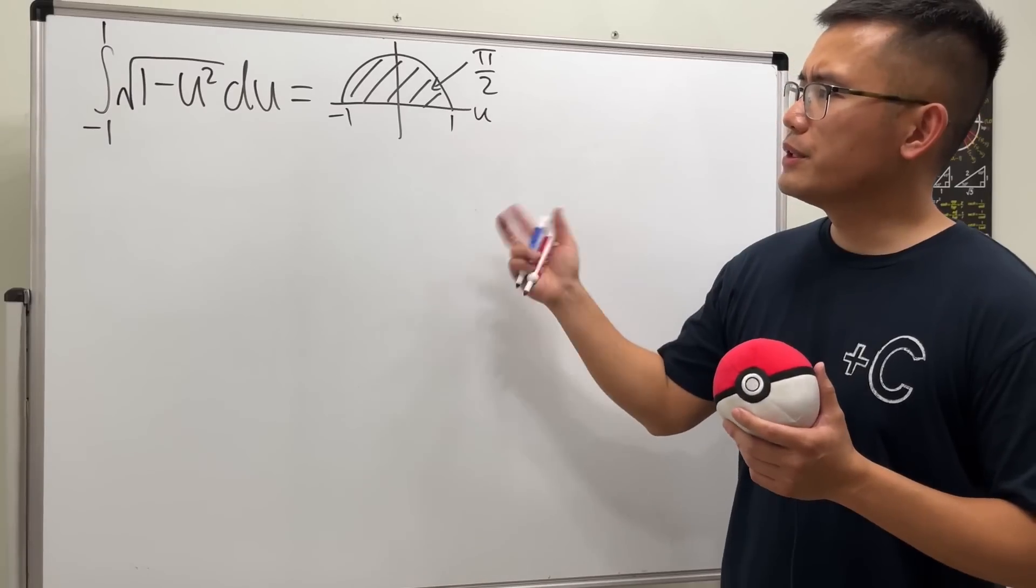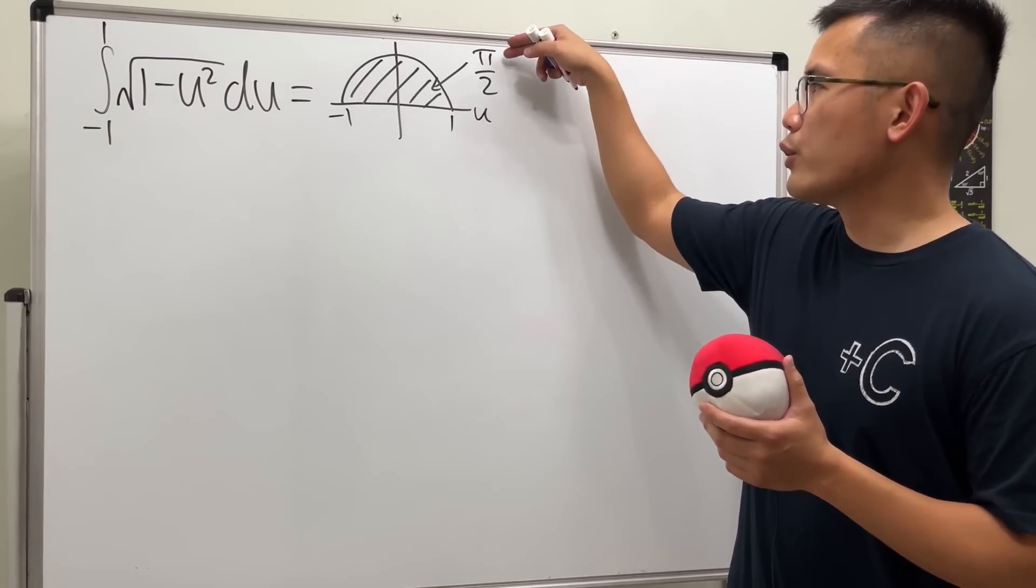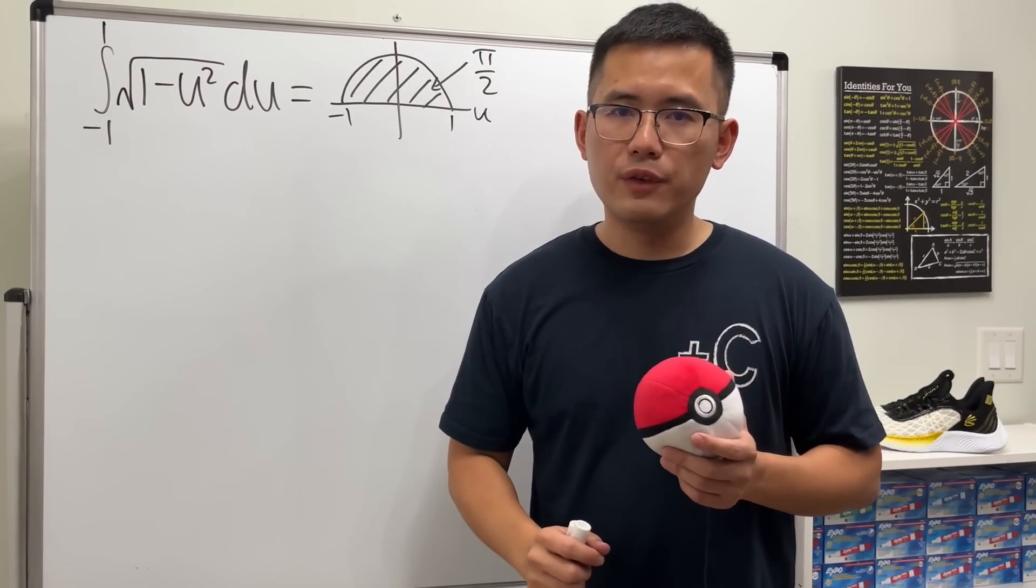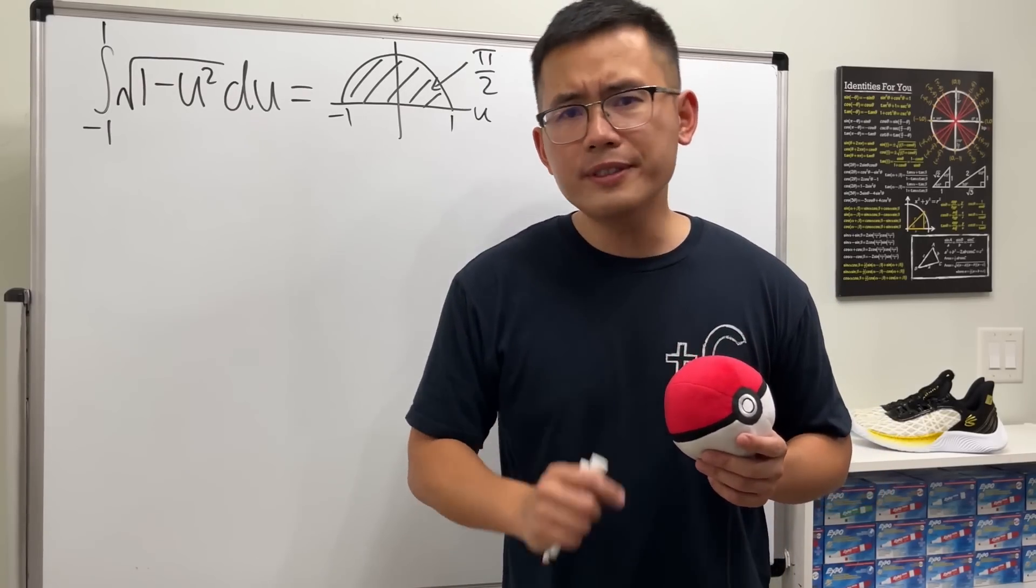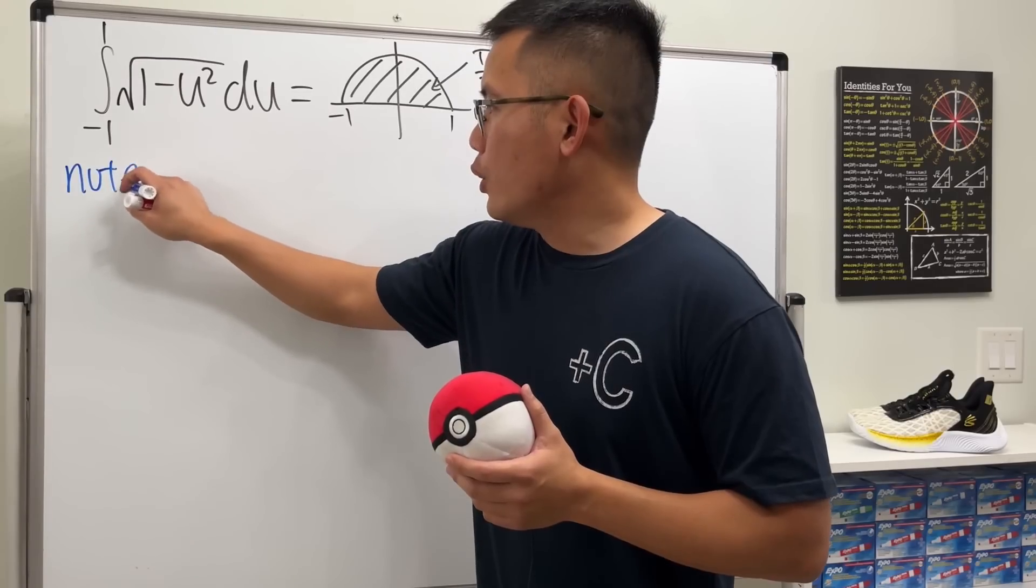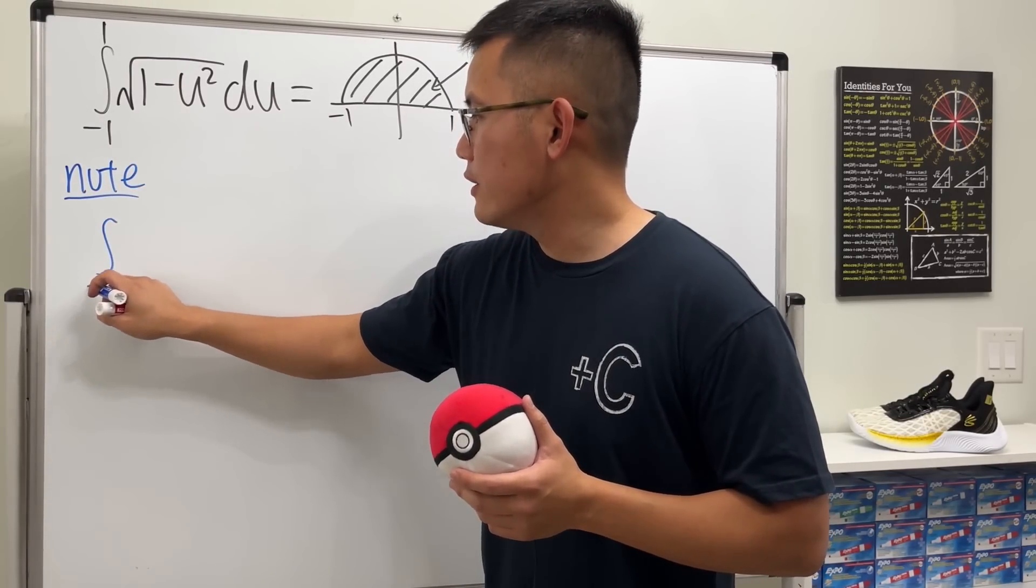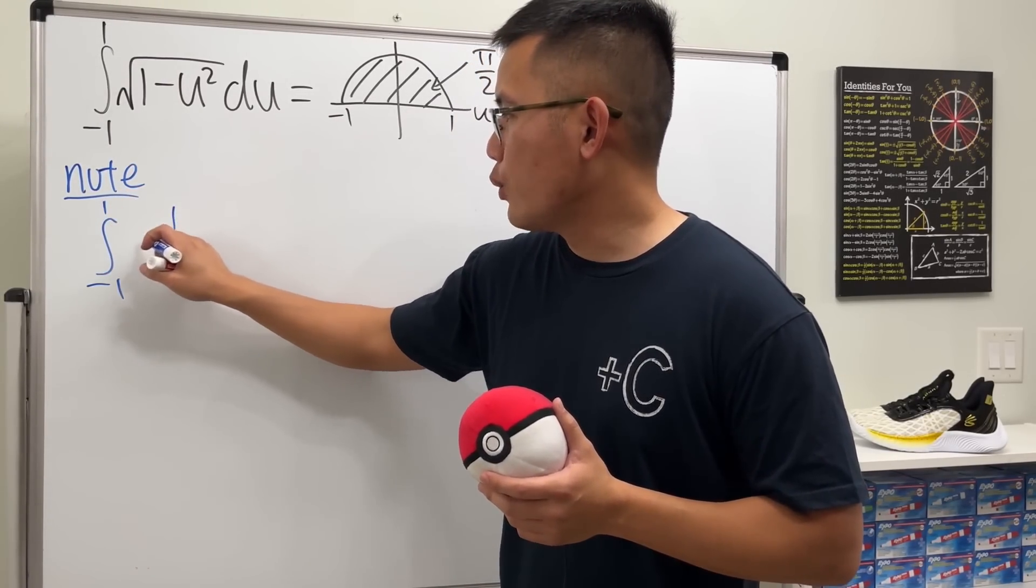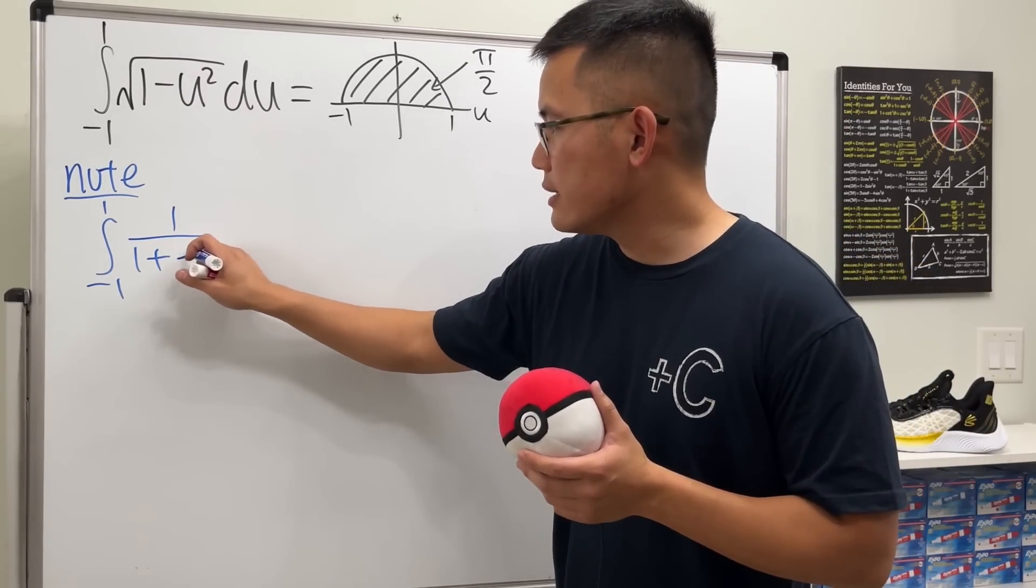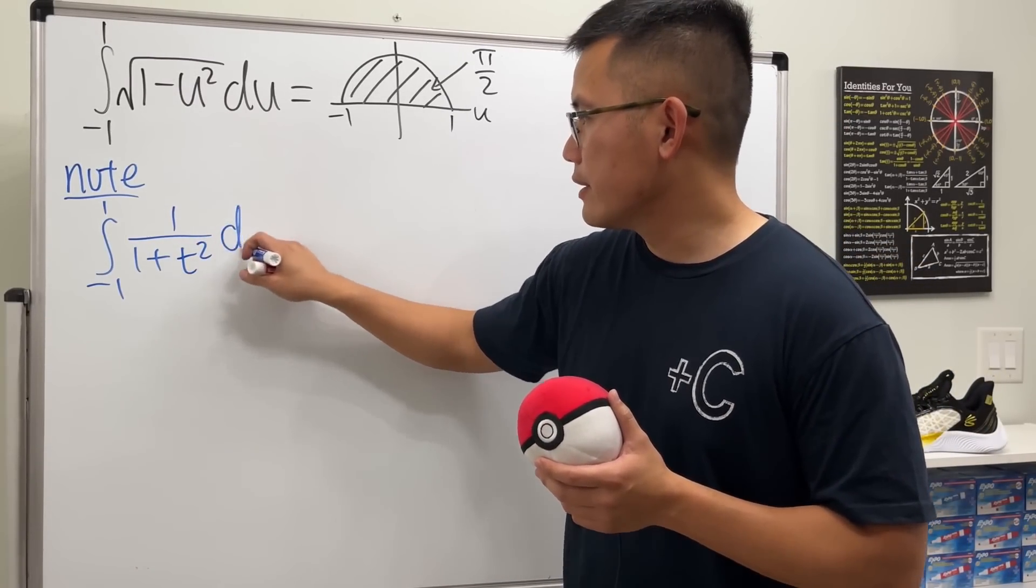Let's look at this integral again, which has the value of π/2. Pretty nice. But now I would like to give you guys another integral that's also equal to π/2. Notice if we integrate from -1 to 1 of 1/(1 + t²) dt.